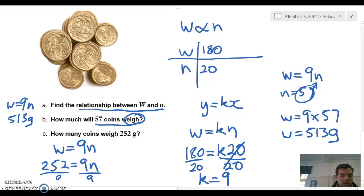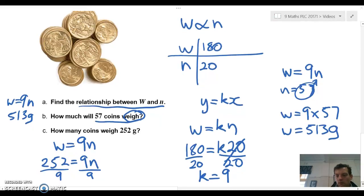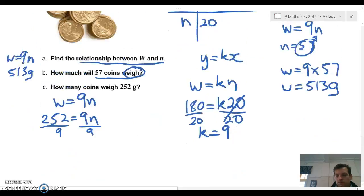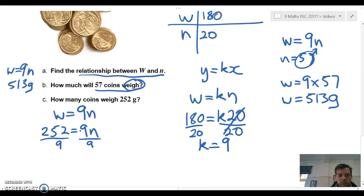So they cancel out, which means we're left with an n value. And then we have 252 divided by 9, equals 28. Which means, how many coins weigh 252 grams? Well, that's 28 coins.